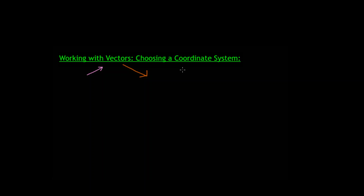To really talk about vectors, we need to choose a coordinate system. There's actually a rule that goes into choosing what coordinate system we use. The coordinate systems that we use are right-handed coordinate systems.